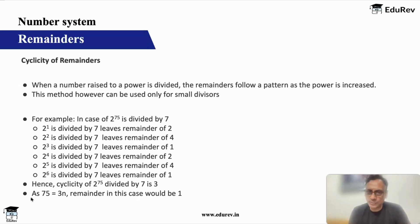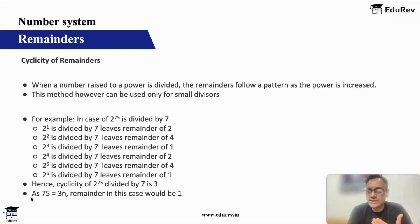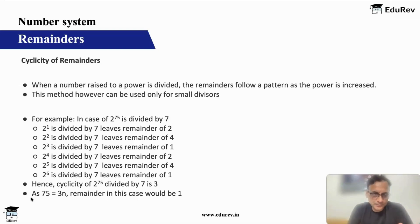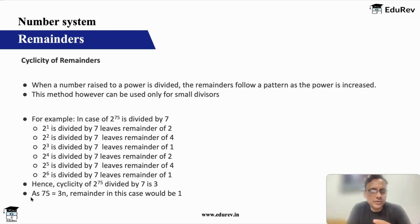I am going to give you four or five methods, and what to apply where is important. Normally with cyclicity, if my divisor is seven, your maximum remainder can be six. So between zero to six, you can have a remainder. That means your remainder will repeat after six times, which is fine.